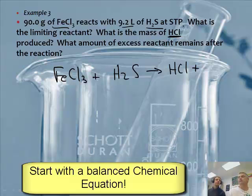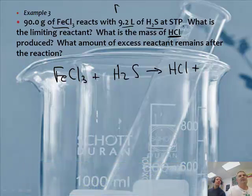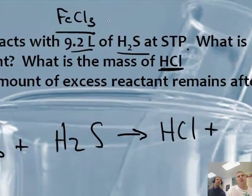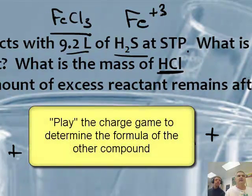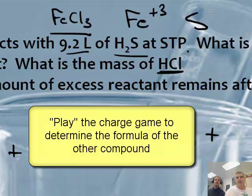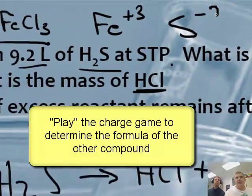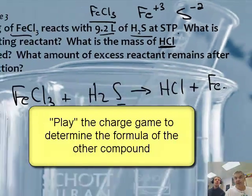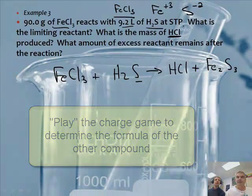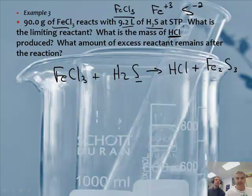Does that mean the Fe goes to the S? We have to put it together. FeCl₃ means the iron's charge is plus 3. And S on the periodic table is in column 16, so its charge is minus 2. So that'll be Fe₂S₃.